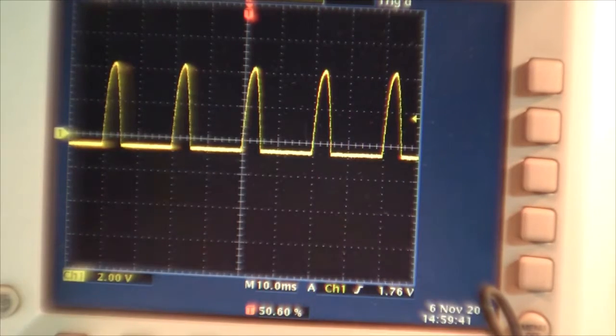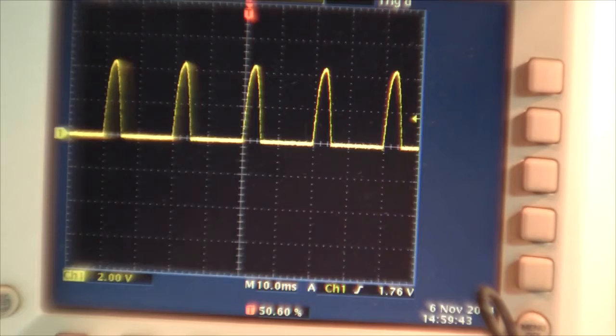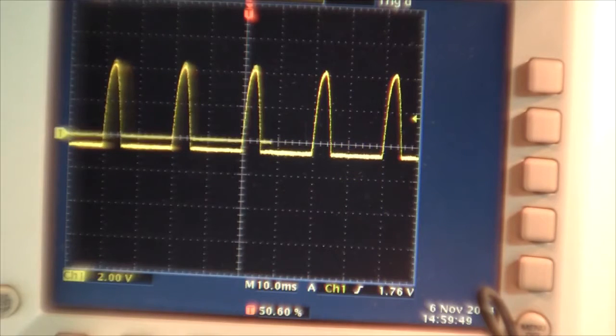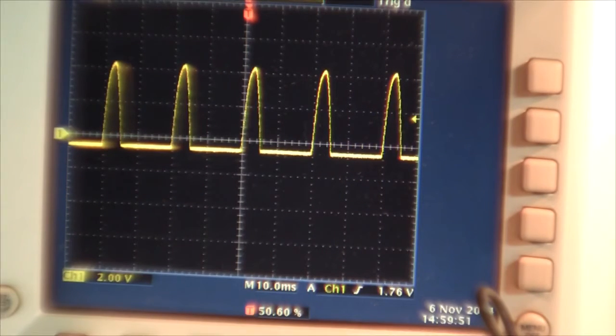I disconnect the load, we have only the positive charging current. I connect the load, we have the positive charging current and a small negative load current. 100 times a second the current changes the direction and this is said to eliminate the gassing of the battery.